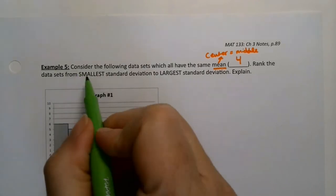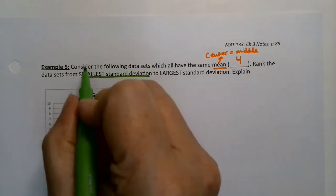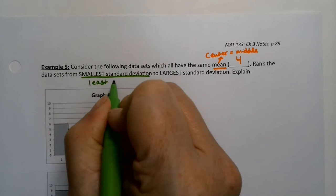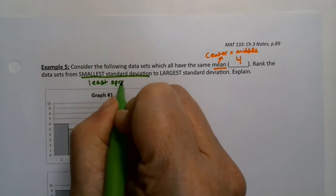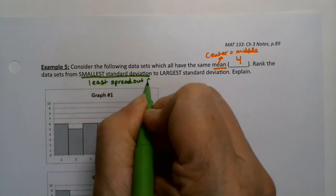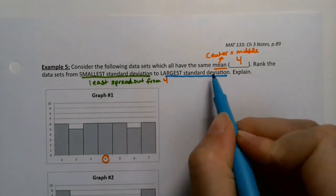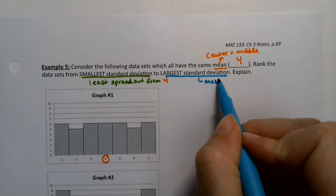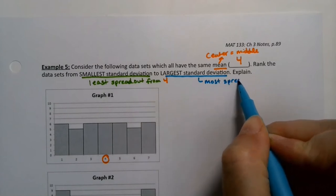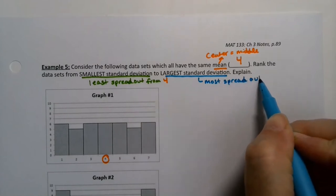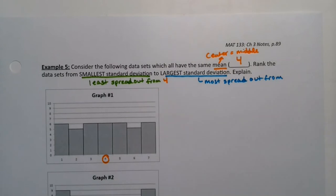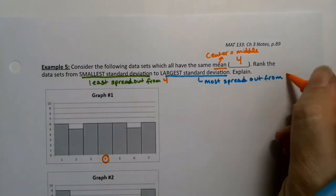Okay, so the smallest standard deviation would be the least spread out from four, because four is that mean. The largest standard deviation would be the most spread out from four, because again, four is that mean.